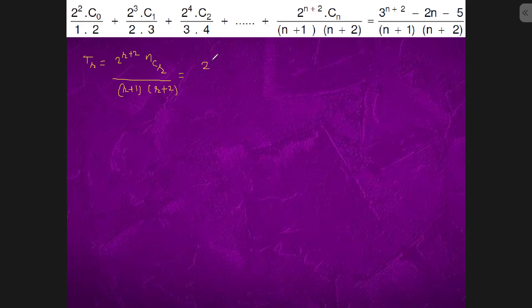This could be further written as 2 to the power r plus 2 n factorial upon r factorial into n minus r factorial.